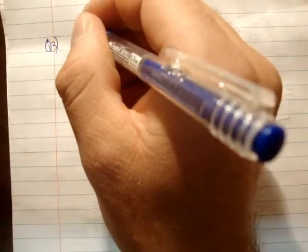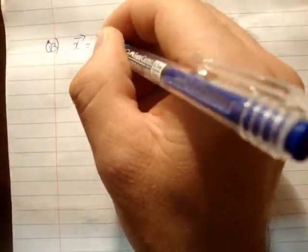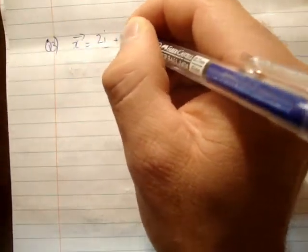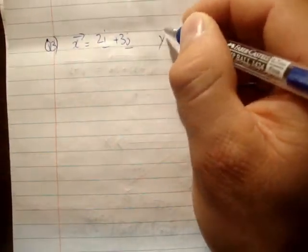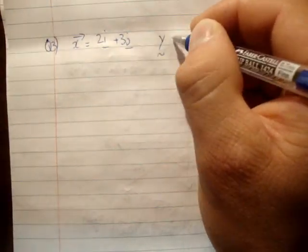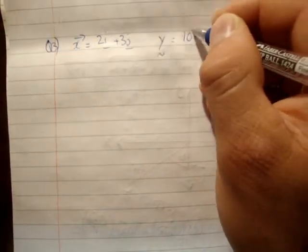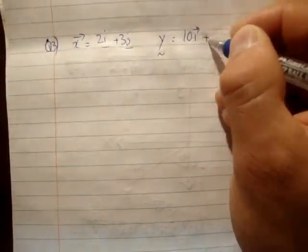So question 3, we're given the following: x is equal to 2i plus 3j, and y is equal to 10i plus 2j.